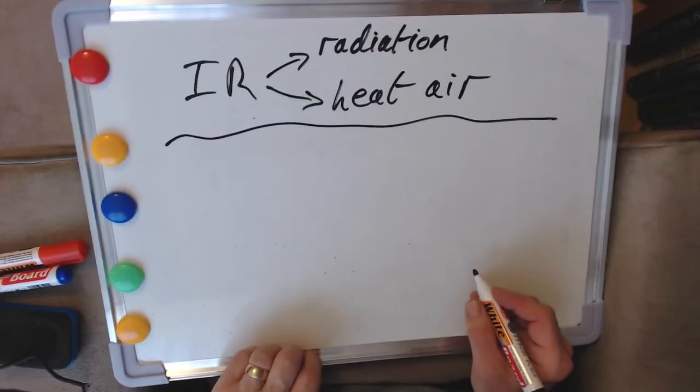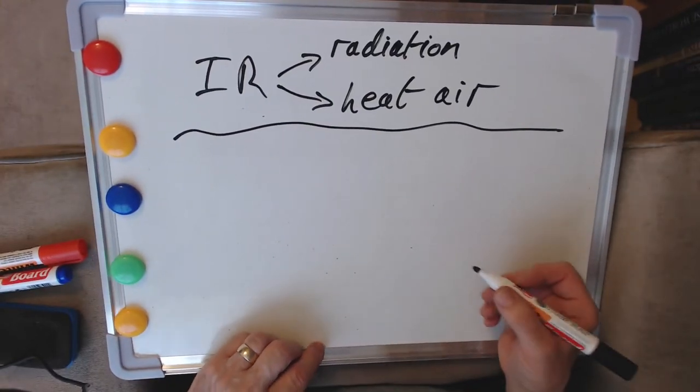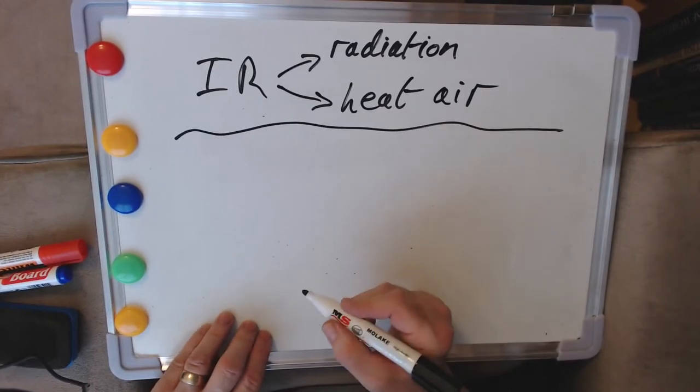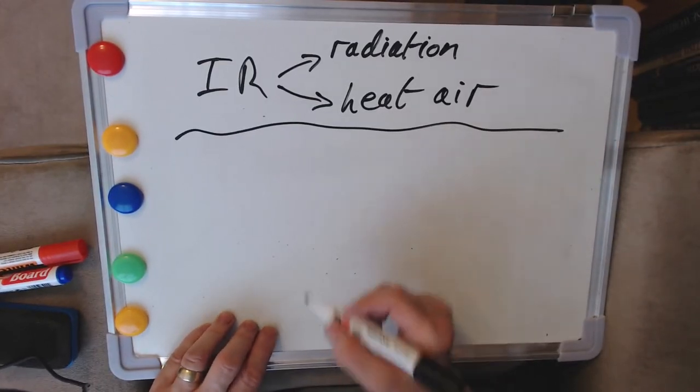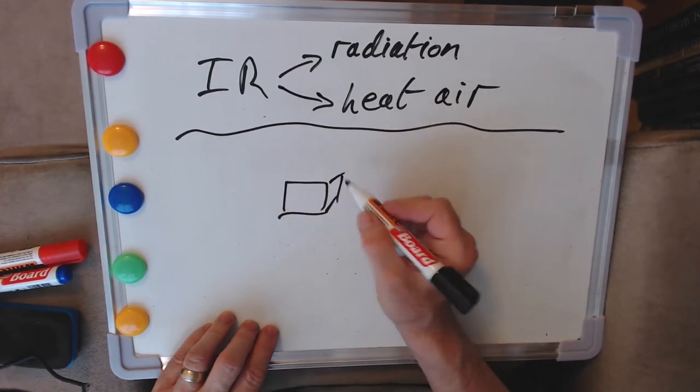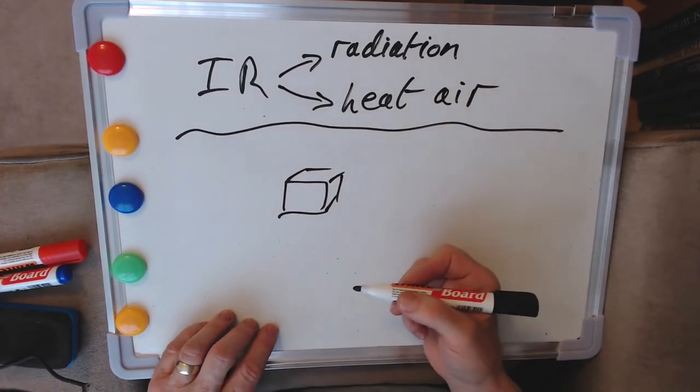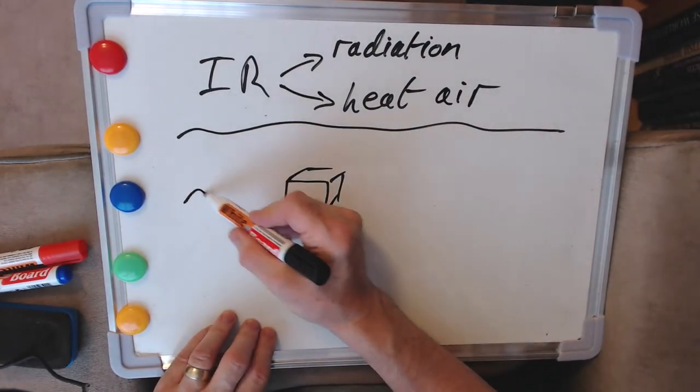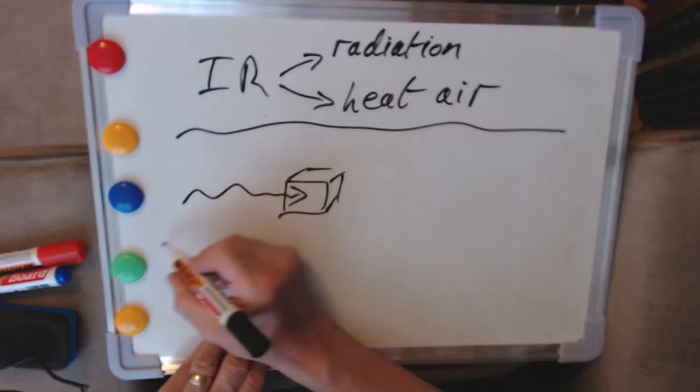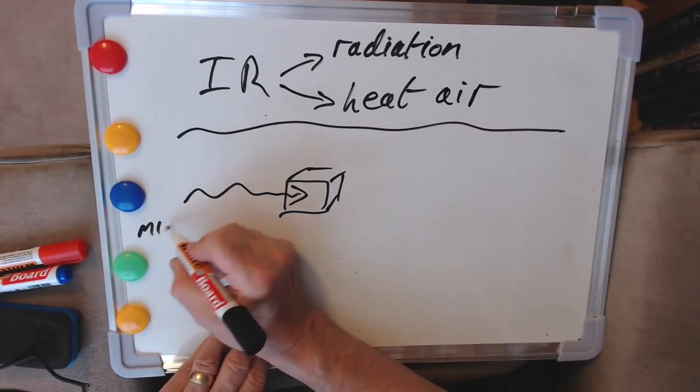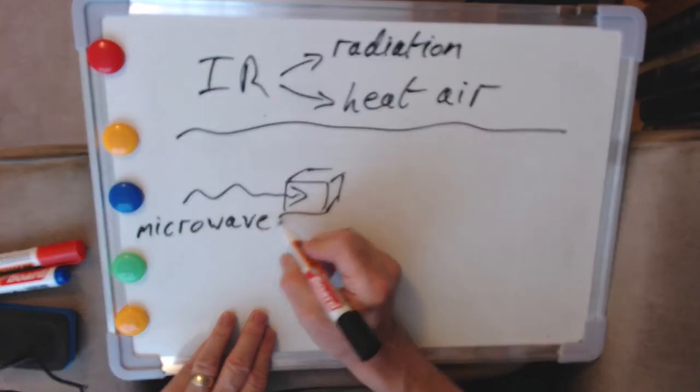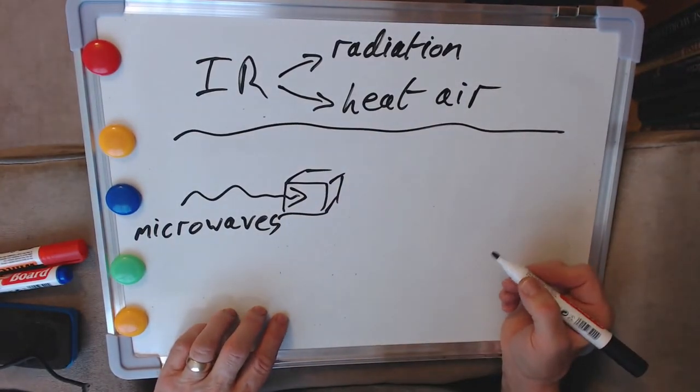A microwave does something really quite different, profoundly different. It's putting microwave radiation into food. So here's for the sake of argument some food and we by some means or another are going to put microwaves into that food. How do they heat it up?